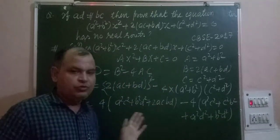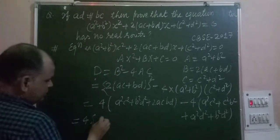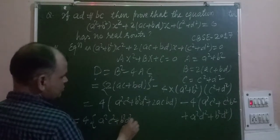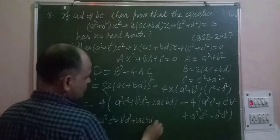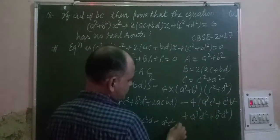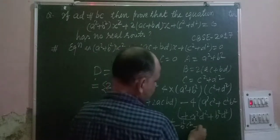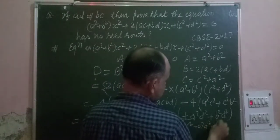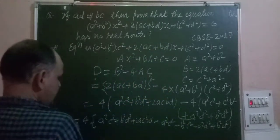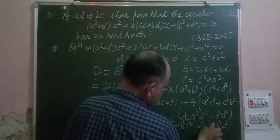Taking 4 common, we get: 4[(A²C² + B²D² + 2ACBD) - (A²C² + A²D² + B²C² + B²D²)]. After cancellation, the A²C² terms cancel and the B²D² terms cancel, leaving: 4[2ACBD - A²D² - B²C²].